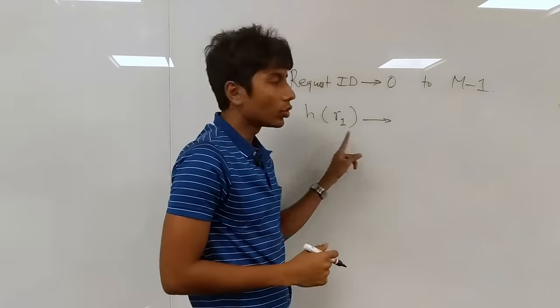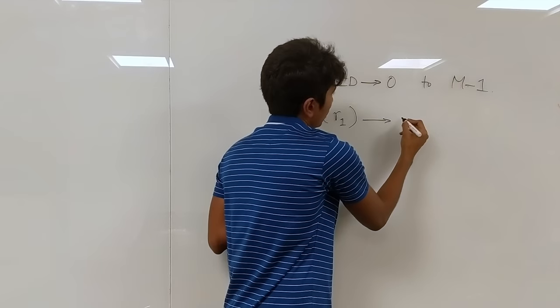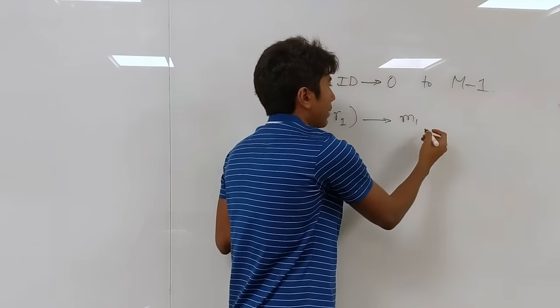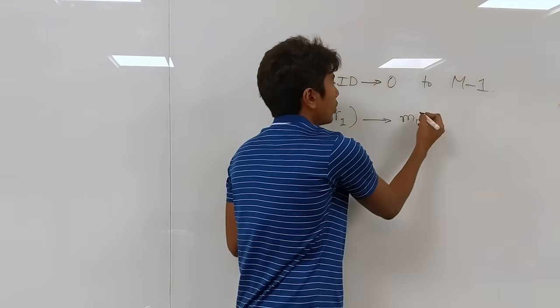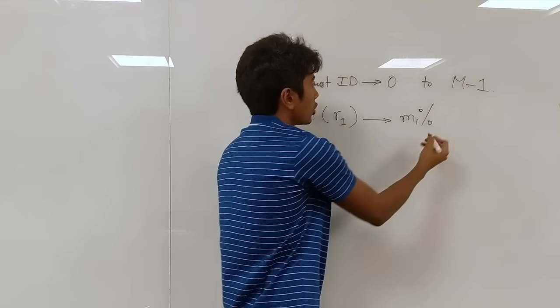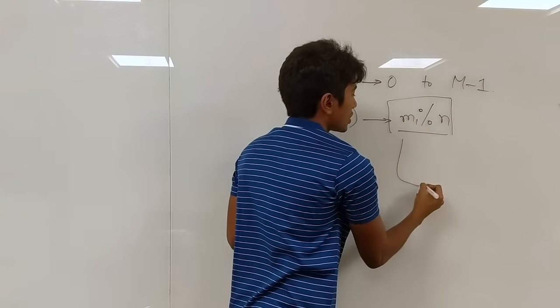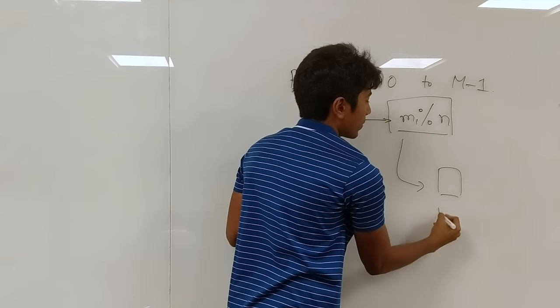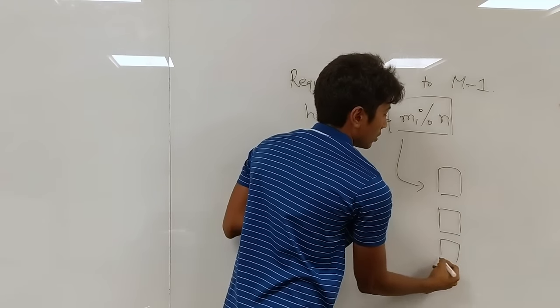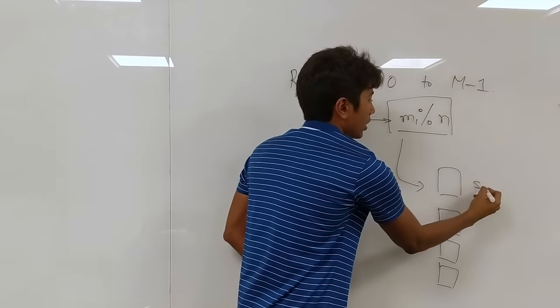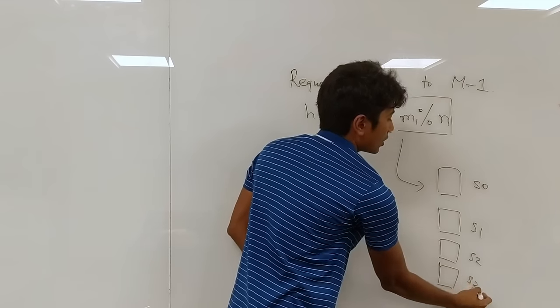When you hash it, you get a particular number. Let's say M1. This number can be mapped to a particular server. How? Because you have N servers, you take the remainder with N. Whatever index you get here, you just send that to the respective server, right? So let's say you have four servers. S0, S1, S2 and S3.